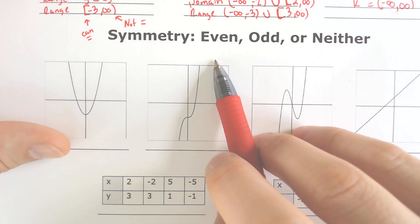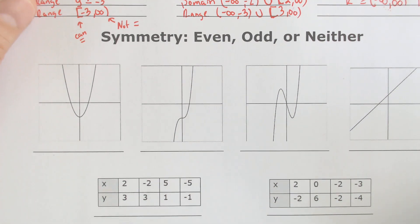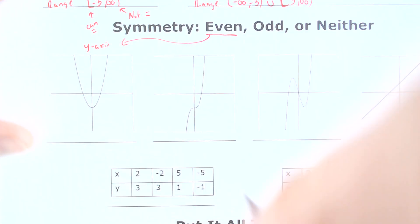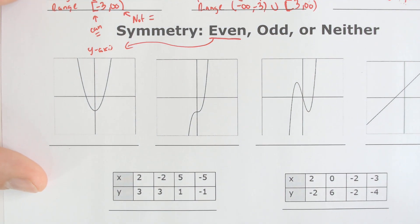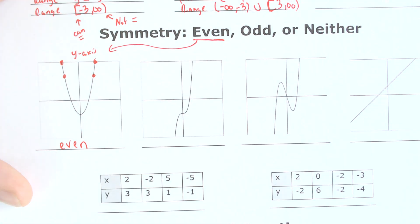Symmetry — determine if something is even, odd, or neither. We are not referring to the function degree; we are referring to if the function itself is an even function, an odd function, or a neither function. Even functions will be folded about the y-axis only — reflective and symmetrical about the y-axis. See how this dot right here will flip over there, and this dot right here would flip over there. This would be considered an even function.